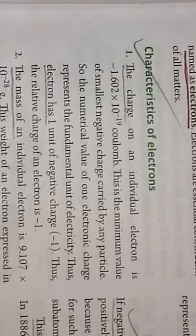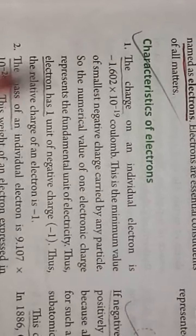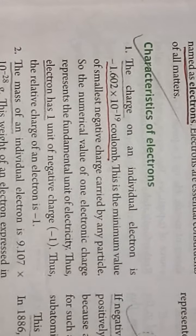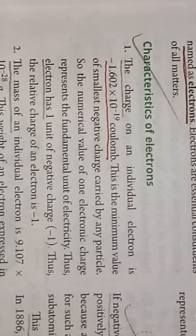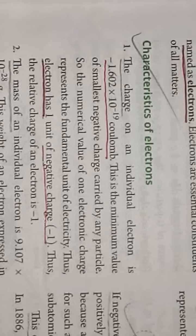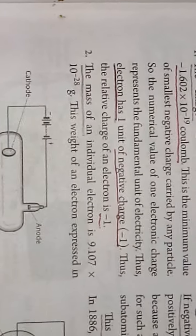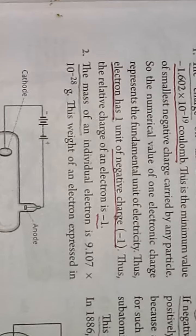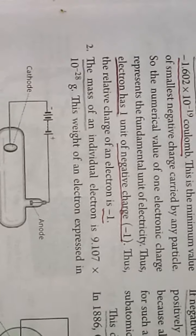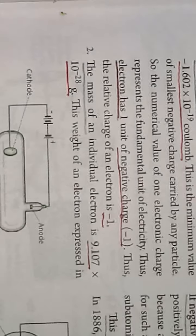What are the characteristics of the electron? The charge of an individual electron is minus 1.602 × 10⁻¹⁹ coulombs. It is most important to remember the charge of an electron — it is the minimum value of the smallest negative charge carried by any particle. It is considered as the unit negative charge, so the electron has one unit negative charge, that is minus 1. Thus the relative charge of an electron is minus 1. The mass of an electron is 9.107 × 10⁻²⁸ grams, expressed as atomic mass units.